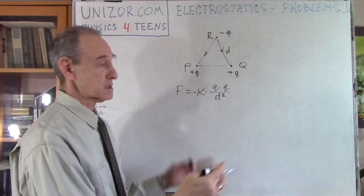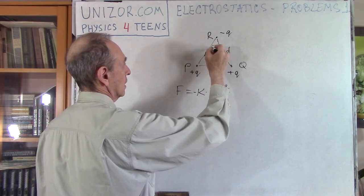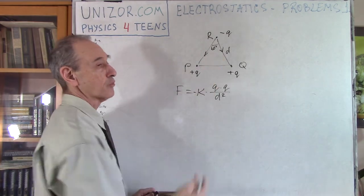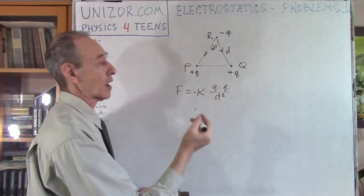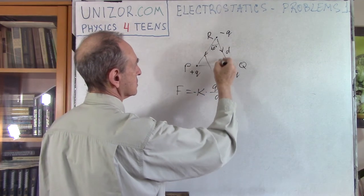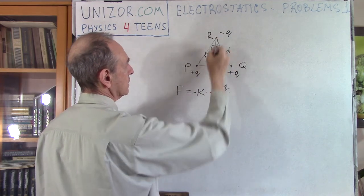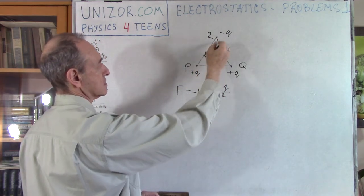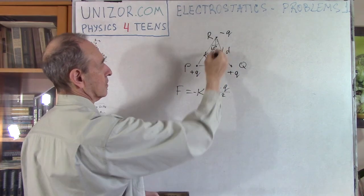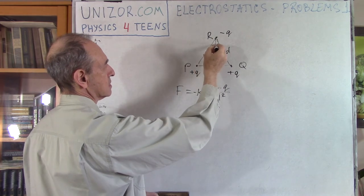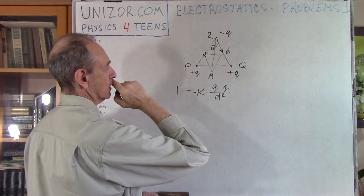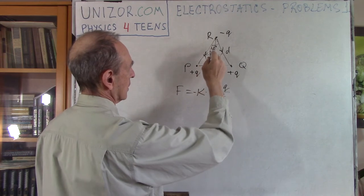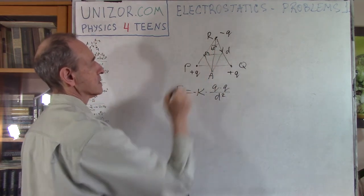They are exactly the same magnitude but directed slightly differently — the angle between them is 60 degrees. So what is the result of adding these two force vectors? By the parallelogram rule, the resultant goes this way. What's the length of RA? If you know the angle, this is D, this is D, so half of this resultant is equal to D times cosine of 30 degrees.